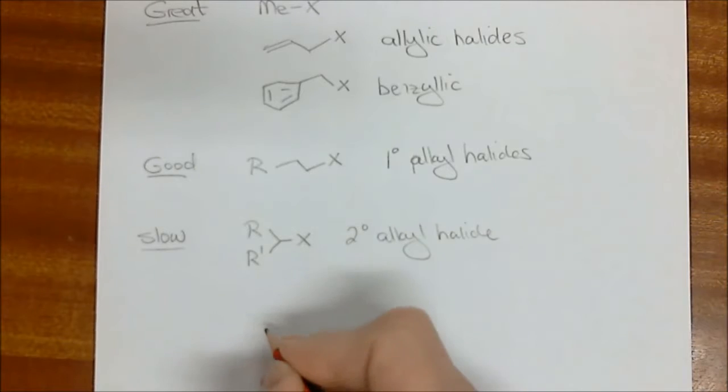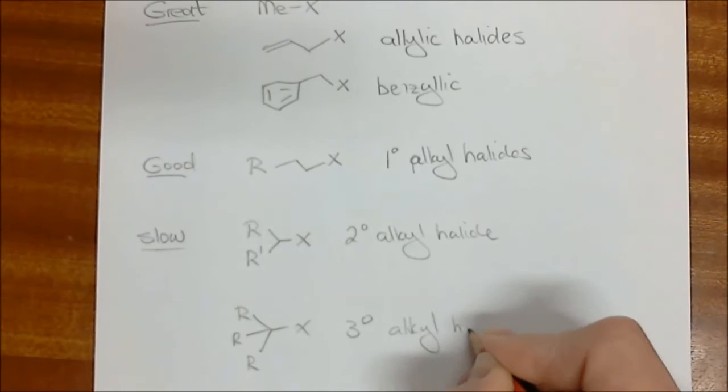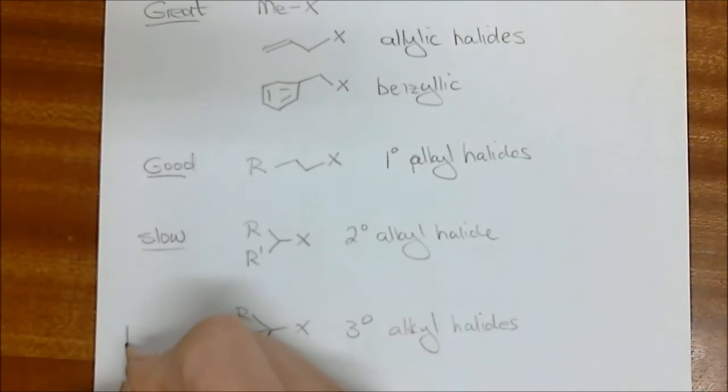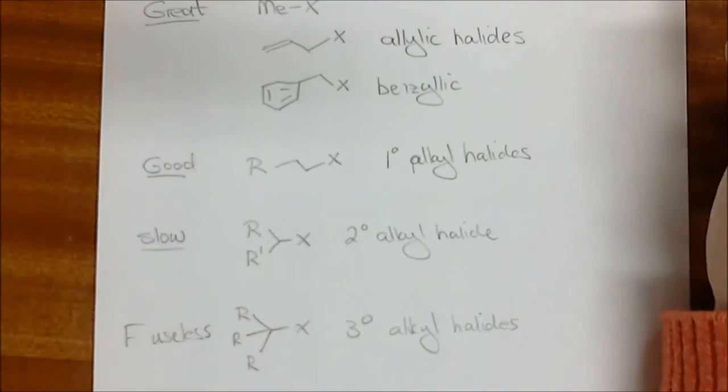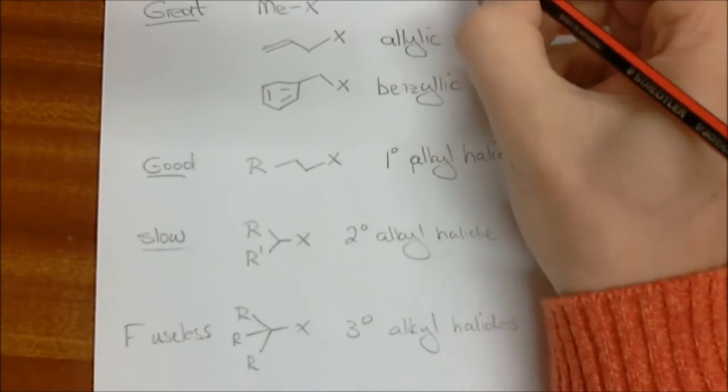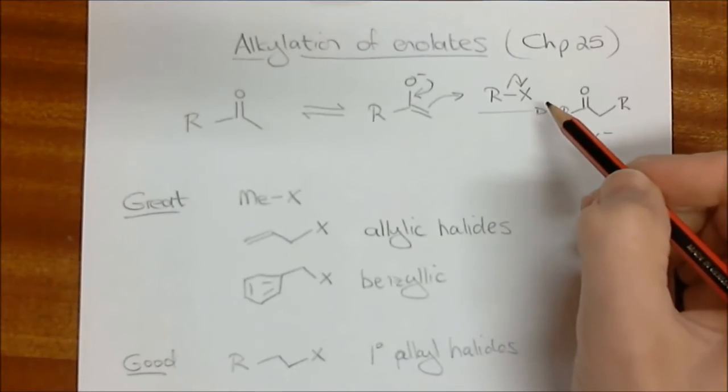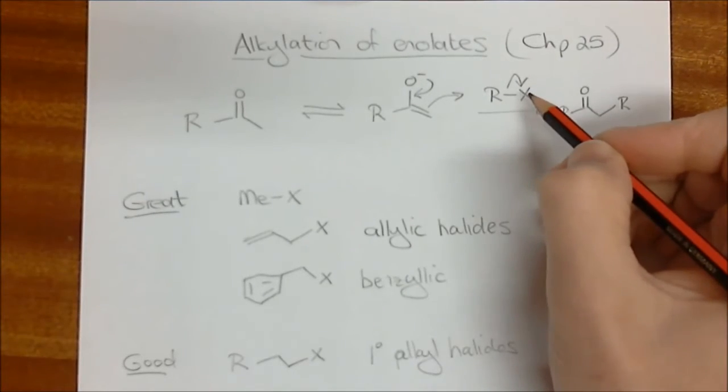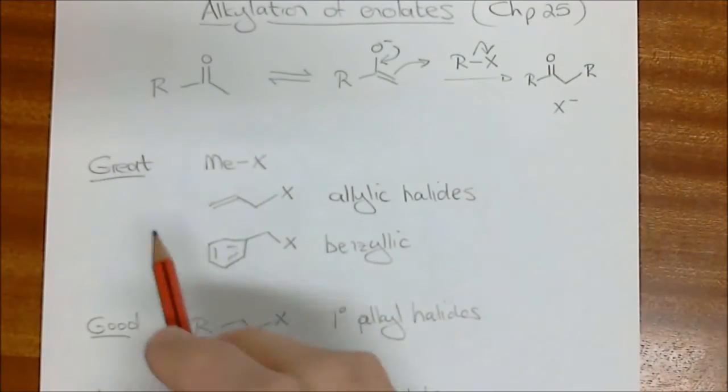And then the last one are the tertiary alkyl halides. And these ones are basically useless. So you can't use these at all for performing this type of reaction. Essentially because this mechanism, when the enolate acts as a nucleophile, is an SN2 reaction. And because of that, we know that tertiary alkyl halides do not undergo SN2 reactions.